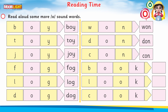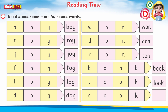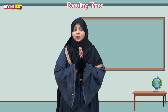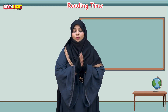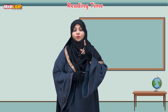Now, dear students, we are going to read the double O sound. Double O sounds 'ooh,' like B-double O-K, 'book.' B-U-K, 'book.' And 'look' — L-double O-K, 'look.'